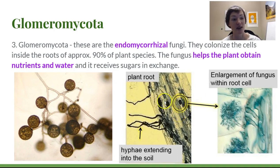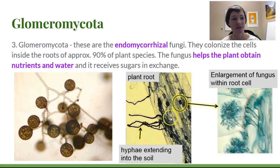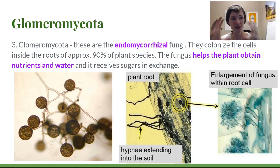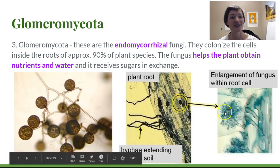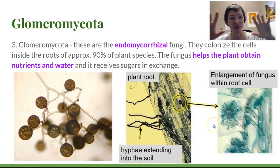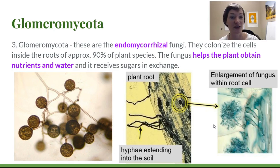They are sometimes called the vesicular arbuscular mycorrhizal fungi, or just arbuscular mycorrhizal fungi. That's because of these structures they make. The vesicles are the large blobs, and the arbuscules — think about Arbor Day — are these highly branched, shrubby-looking structures. They look like little trees, which is where that arbor term comes from.